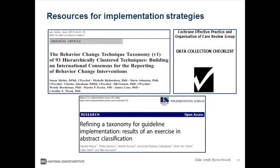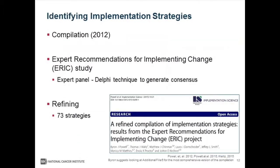Where do you find these implementation strategies? There are several resources available. There are guides and checklists that highlight implementation strategies but may not call them as such. For example, the Behavioral Change Technique Taxonomy put forth by Susan Michie and colleagues is a good compilation. Another resource is the Cochrane's Effective Practice Checklist. There is also the Guideline Implementation Taxonomy by Marza and colleagues. Byron Powell at UNC and colleagues conducted a structured review published in 2012, which highlighted the need for generating consensus on the various terms used to name these strategies.